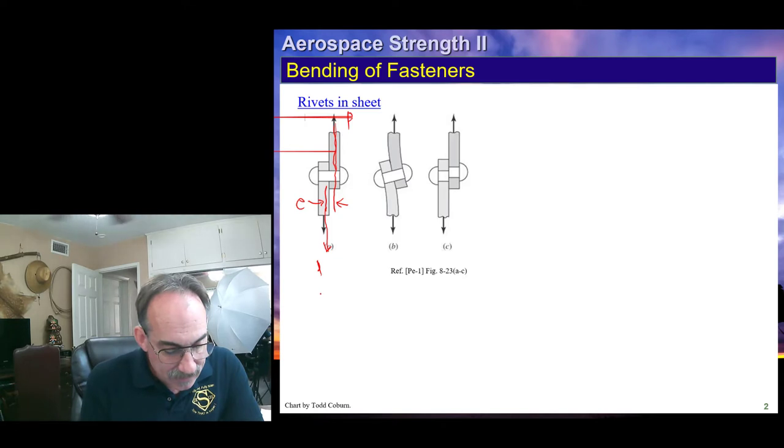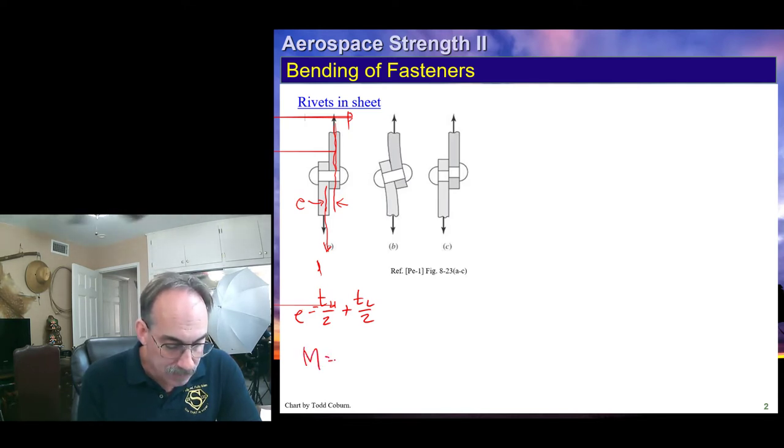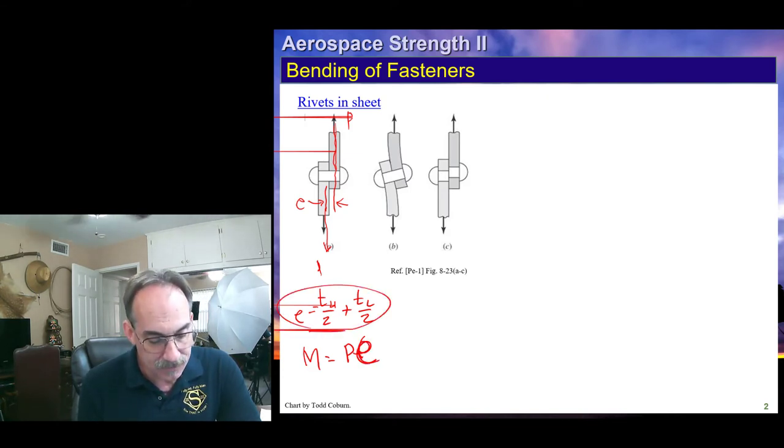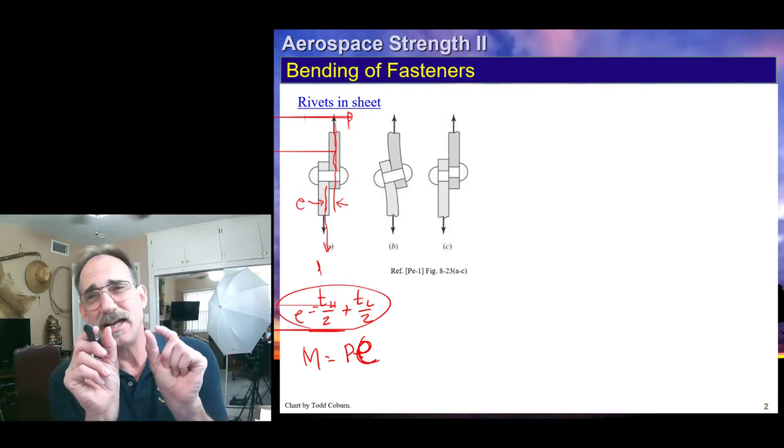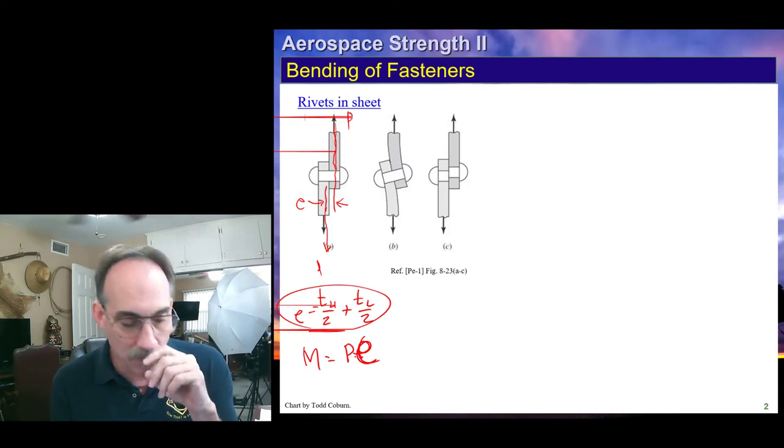The eccentricity is T of the upper sheet over 2 plus T of the lower sheet over 2, and that is the total eccentricity. If we wanted to look at the moment in this bolt, it's just the force transferring times this eccentricity. Now if the sheet is really thin, then this eccentricity becomes quite small, and the moment is small.